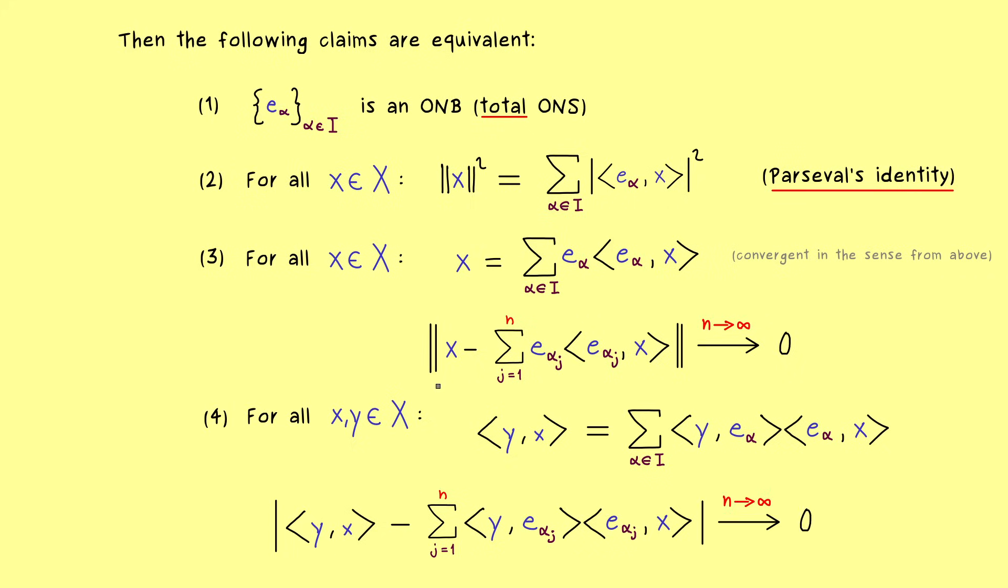So there we have it. These are the nice equivalences we have for an ONB. And they are usually described by Parseval's identity. However, I can also tell you an informal way to summarize these properties. There, some people just say, when we use the infinite sum together with the unit vectors e_alpha and e_alpha in the inner product, then nothing really happens, so it acts like an identity operator.